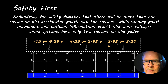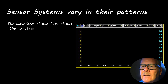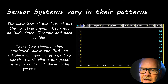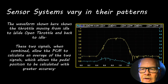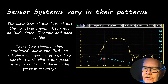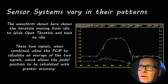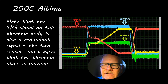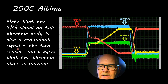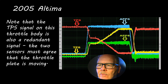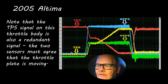Sensor systems vary in their patterns — they don't all look the same. The waveform shows a throttle moving from idle to wide open throttle and back to idle. It's got two potentiometers and the engine controller knows exactly how those are supposed to agree with one another. It calculates an average of the two signals and allows the pedal position to be calculated with greater accuracy. Plus if one of them fails, you wind up going into one of the limp modes. On a 2005 Altima, the TPS signal on the throttle body is redundant — two sensors on the throttle body and two sensors on the accelerator pedal — and the signals are mirrored.